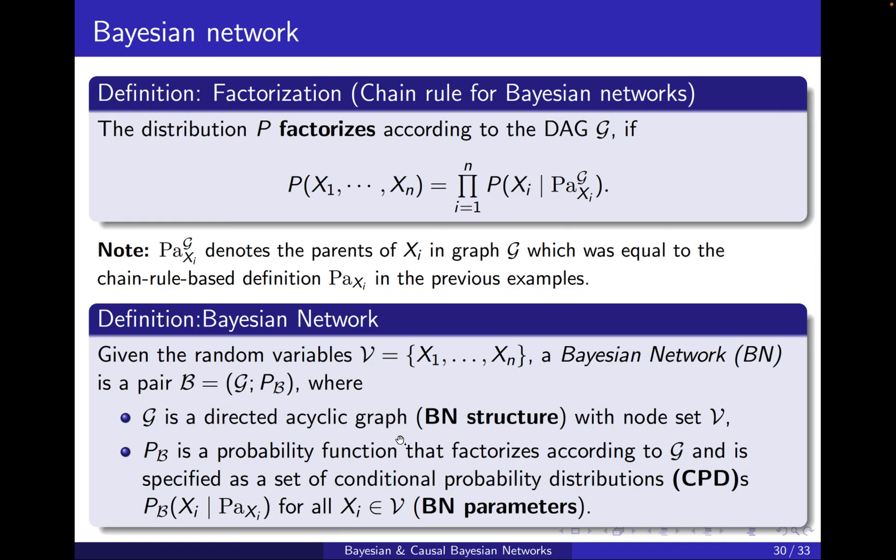Just note that we are assuming that the joint distribution, this P, can be written as the multiplication of the variables conditioned on their parents according to the graph, which is basically P factorizing according to G, which is here.